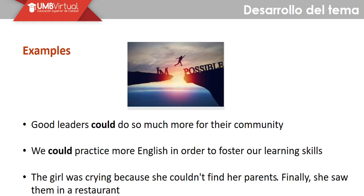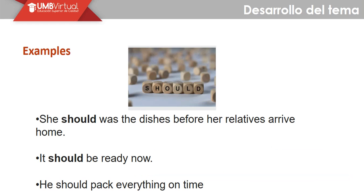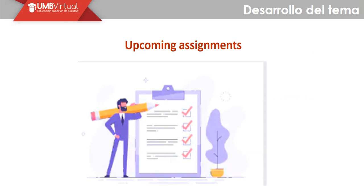En la segunda oración: 'We could practice more English in order to foster our learning skills' — nosotros podíamos practicar más inglés para mejorar nuestras habilidades de aprendizaje. A diferencia de la última: 'The girl was crying because she couldn't find her parents' — ella no pudo encontrar a sus padres — estamos haciendo referencia a una situación del pasado. Ella debería lavar sus platos antes de que sus parientes lleguen a casa — aquí tenemos el uso del modal 'should' que se utiliza frecuentemente como un consejo. Let's see now our upcoming assignments.